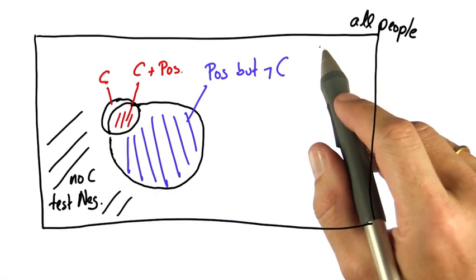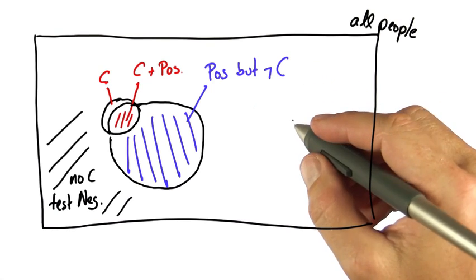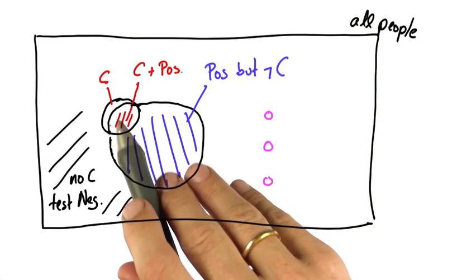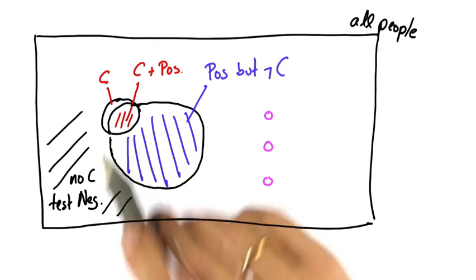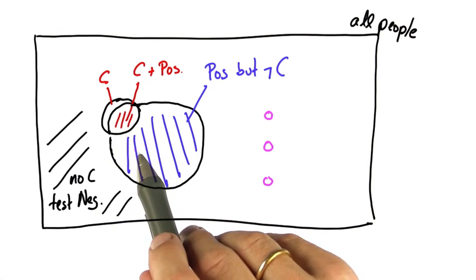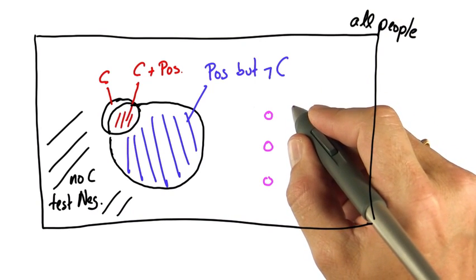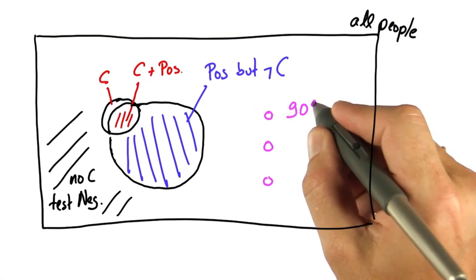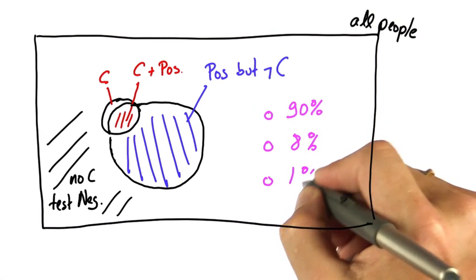So let me ask you again. Suppose you have a positive test. What do you think? With a prior probability of cancer of 1%, a sensitivity and specificity of 90%, do you think your new chances are now 90% or 8% or still just 1%?